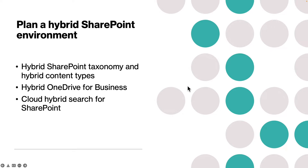After planning your Exchange hybrid, the next step is to plan a hybrid SharePoint environment if you have an on-prem SharePoint environment. Creating a SharePoint hybrid environment is about using both SharePoint Server on-premises and Microsoft 365 SharePoint Online to achieve your business goals.